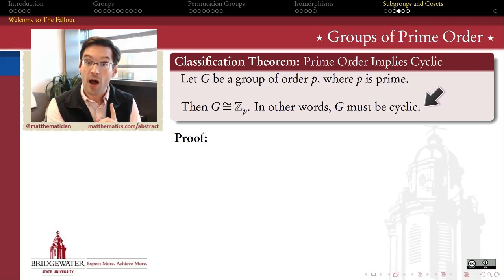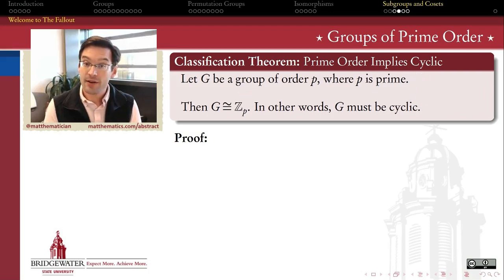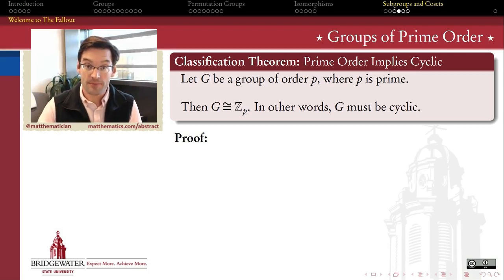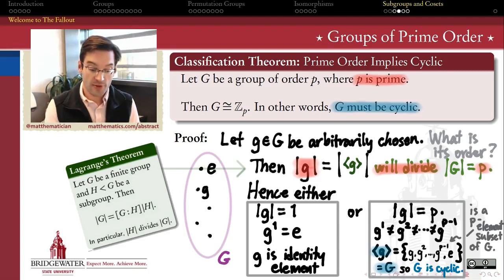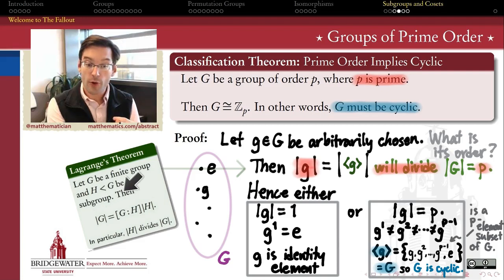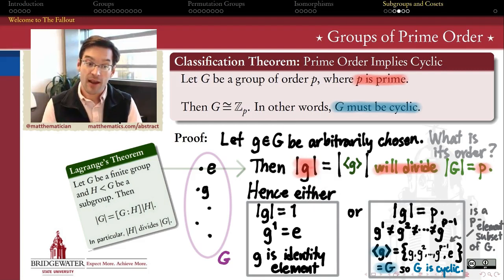In other words, up to isomorphism, there is only one kind of finite group with a prime number of elements: the cyclic group of order P. This was a consequence of Lagrange's theorem, because Lagrange guarantees that the order of any element in such a group is either going to be equal to one or equal to P, because the order of that element has to be a divisor of the order of the group, and here the order of the group is prime.